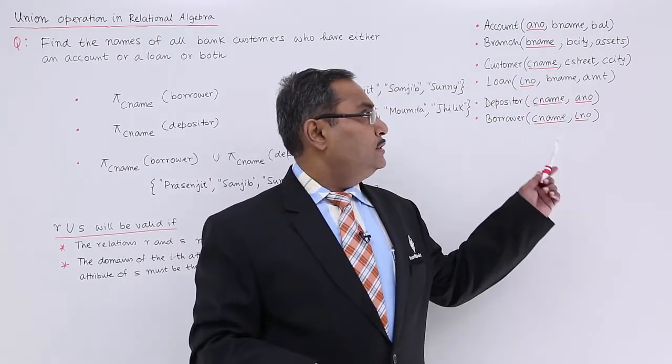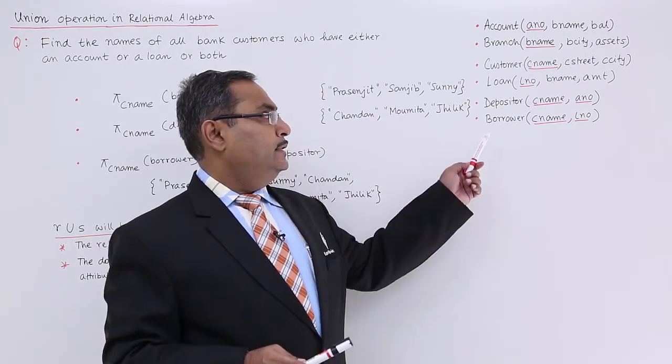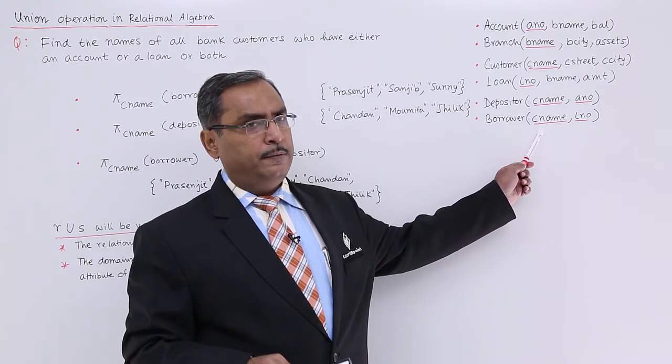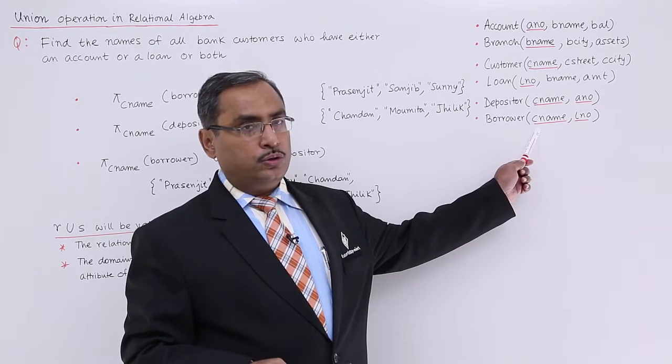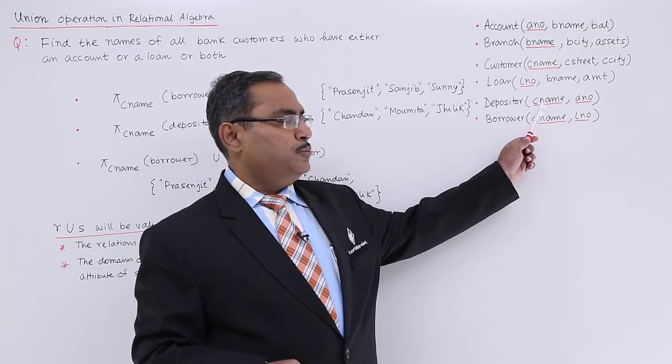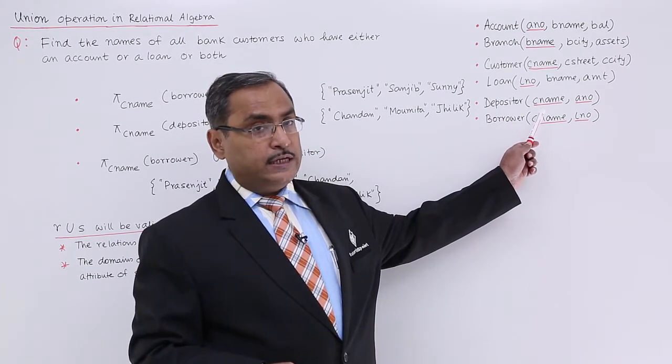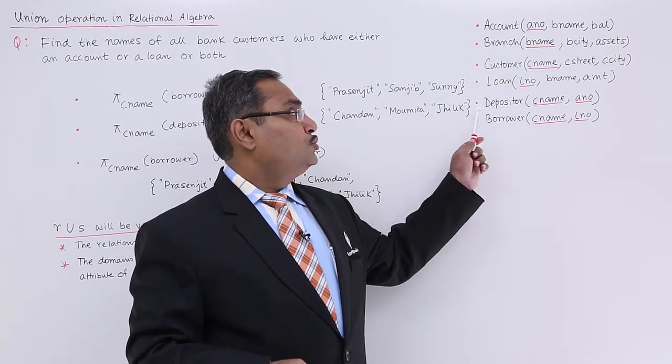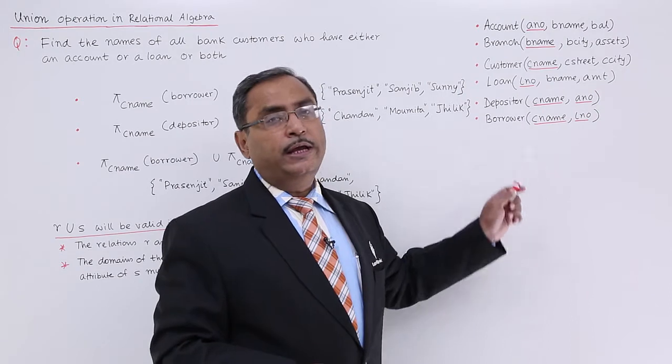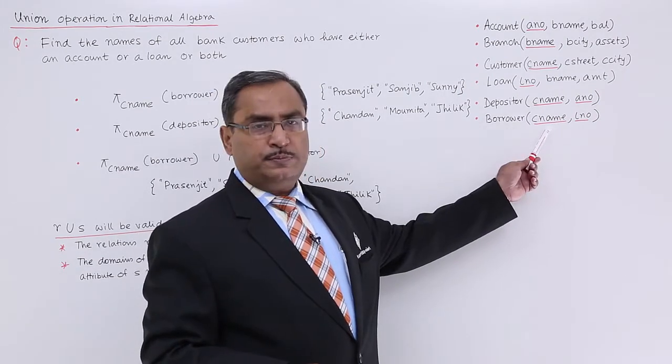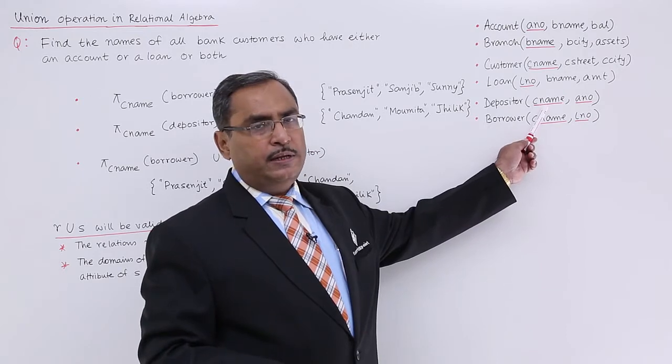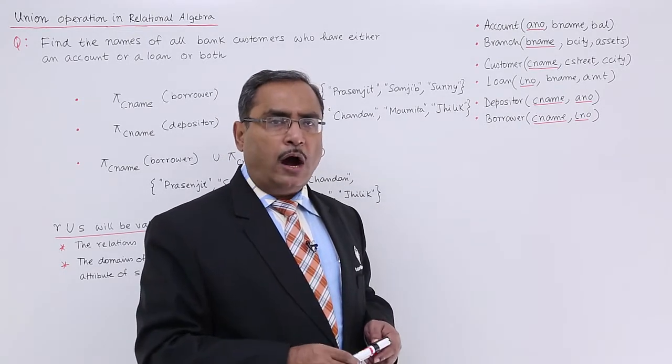Now we know that if we consider all the schemas here, borrower is actually holding all customer names who are having the respective loan accounts. Depositor is holding those customer names who are having the respective savings bank accounts. So borrower and depositor, these two schemas will be required here because they are holding the respective customer names for the loan accounts and for the savings bank accounts. So how to get those names out?